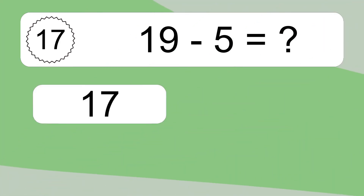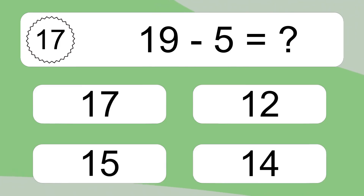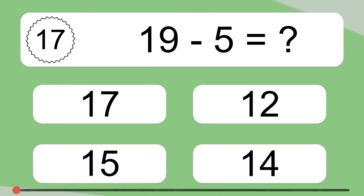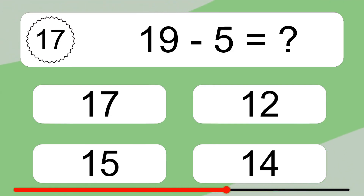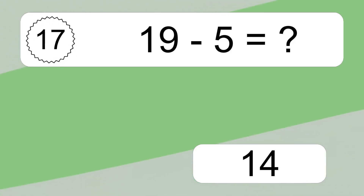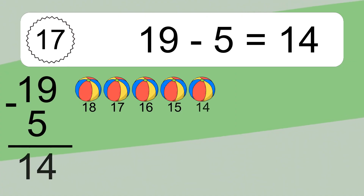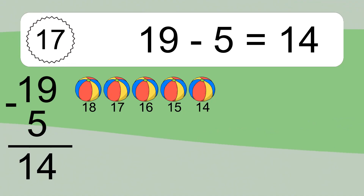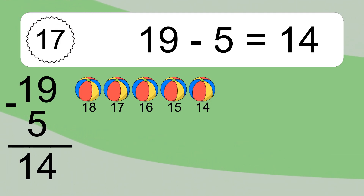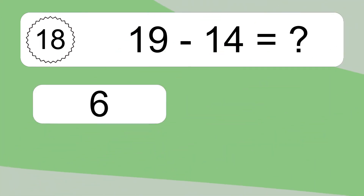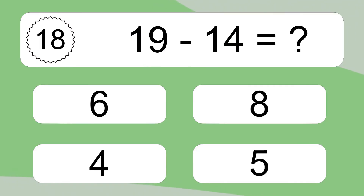19 minus 5 equals what? 19 minus 5 equals 14. Let's count it: 18, 17, 16, 15, 14. 19 minus 14 equals what?